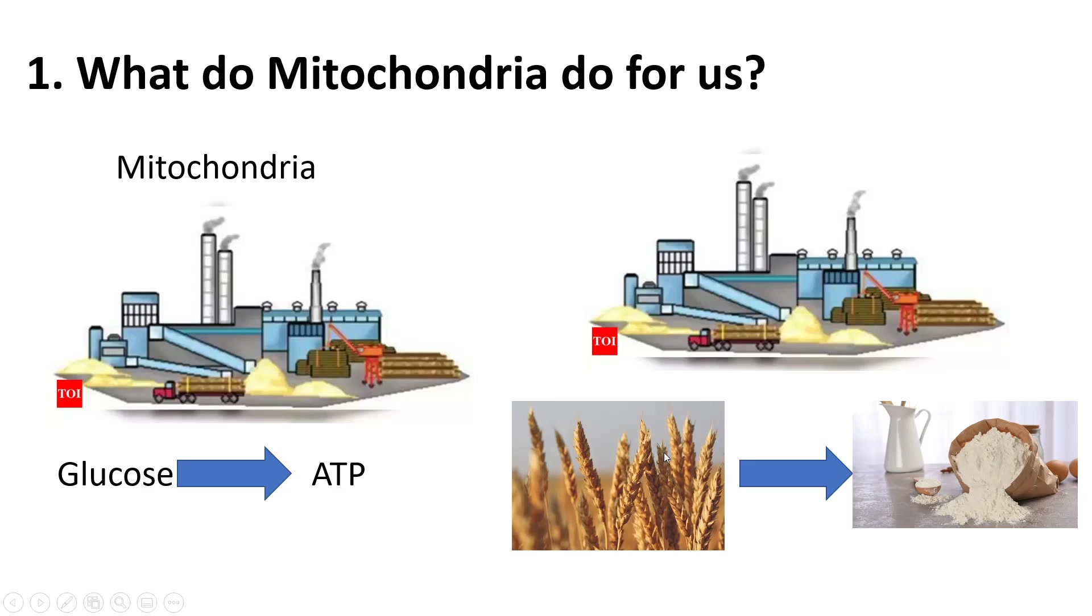A good analogy would be thinking about something such as wheat. No one's going to eat just wheat for energy. It has to go to a factory to be converted into flour, oatmeal, things of that nature. Think of the wheat as glucose and the ATP as the food that we can eat after it's been processed.